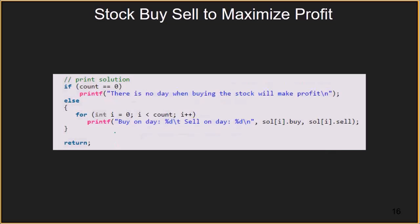After the loop, we have the final value of the count variable. If count equals 0, it means there is no day on which buying and selling will make a profit. Otherwise, we print the days on which profit can be earned by running a for loop and printing the buy and sell values in the solution array.